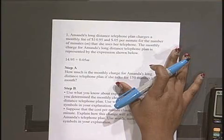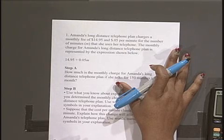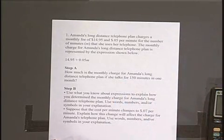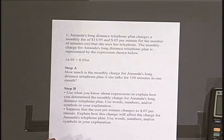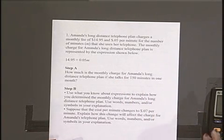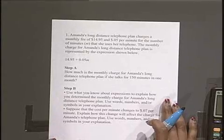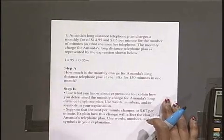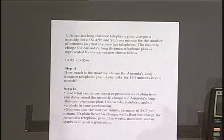The first problem is Amanda's long-distance telephone plan charges a monthly fee of $14.95 and $0.05 per minute for the number of minutes, M, that she uses her telephone. The monthly charge for Amanda's long-distance telephone plan is represented by the expression shown below, $14.95 plus $0.05 M.